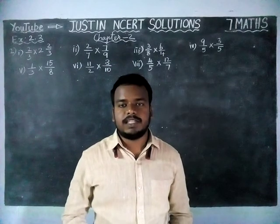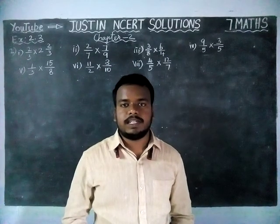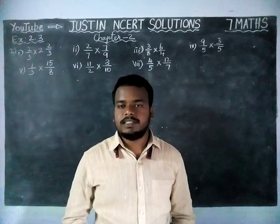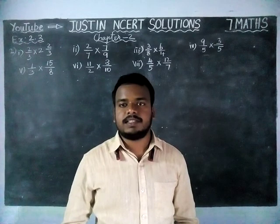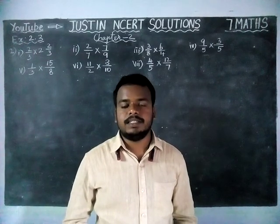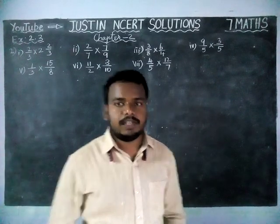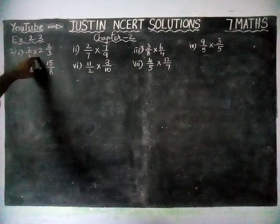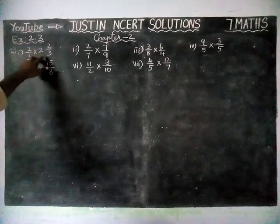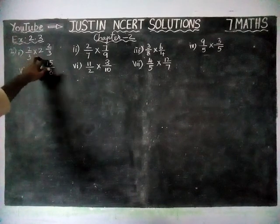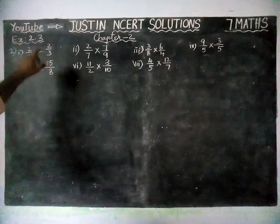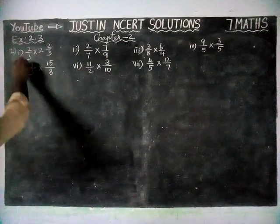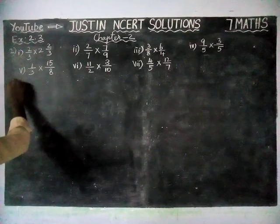Hi students, welcome to Justine MCRT Solutions. In this video, we are going to see 7th Standard Maths, Chapter 2, Exercise 2.3, 2nd question. Here they have given some products. We have to find the products and if it is possible, we have to simplify into the lowest form. So first we are going to see that.